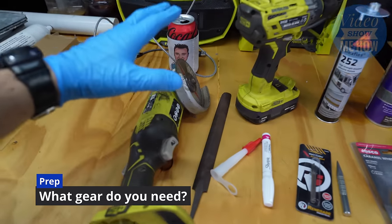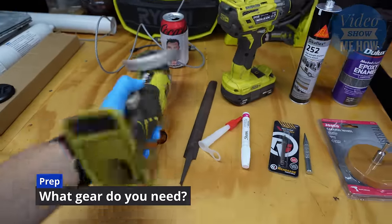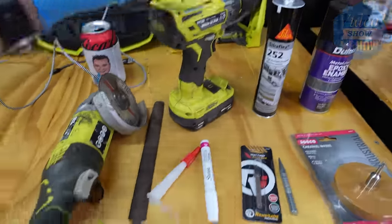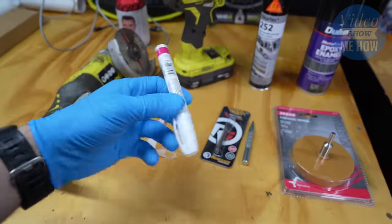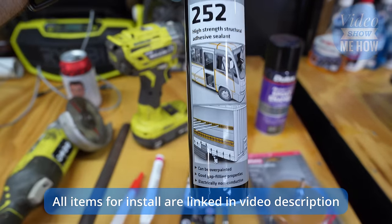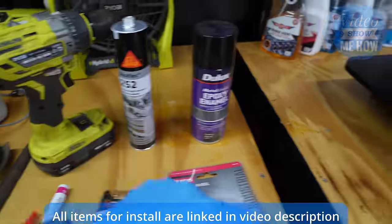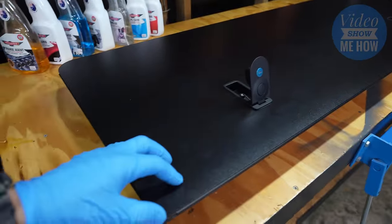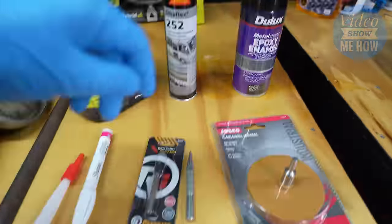As far as what gear we're going to need, we're going to need most of this. So a grinder or rotary tool, but ideally a grinder, a drill, file, a bit of a paint pen for marking out where we need to cut. Some Sikaflex 252, this is the high-strength structural adhesive.